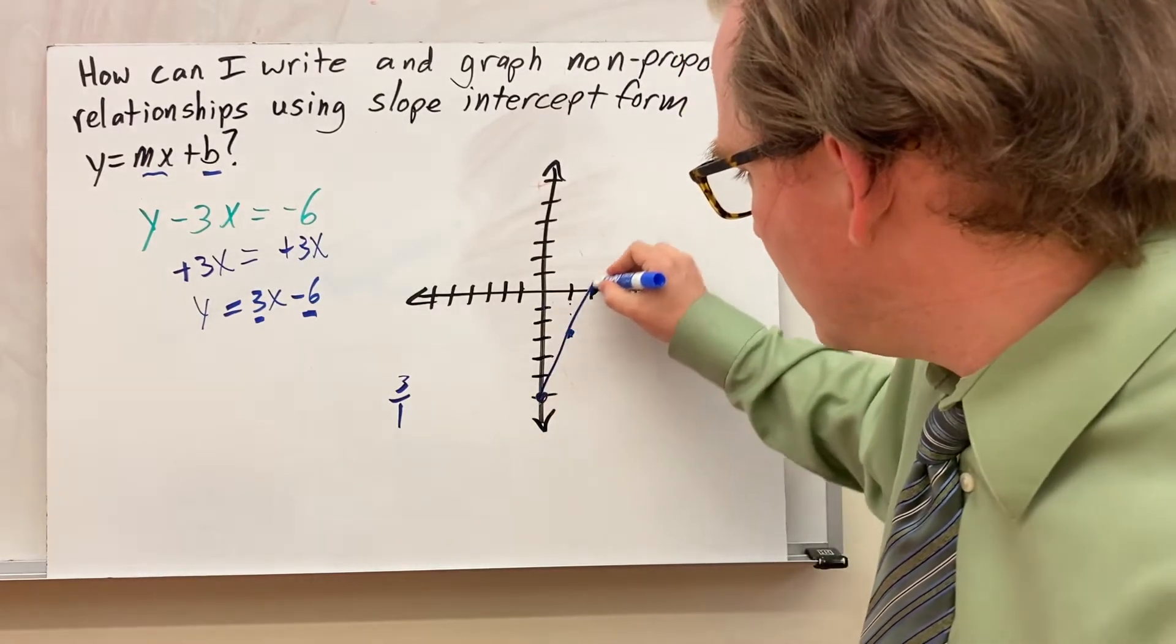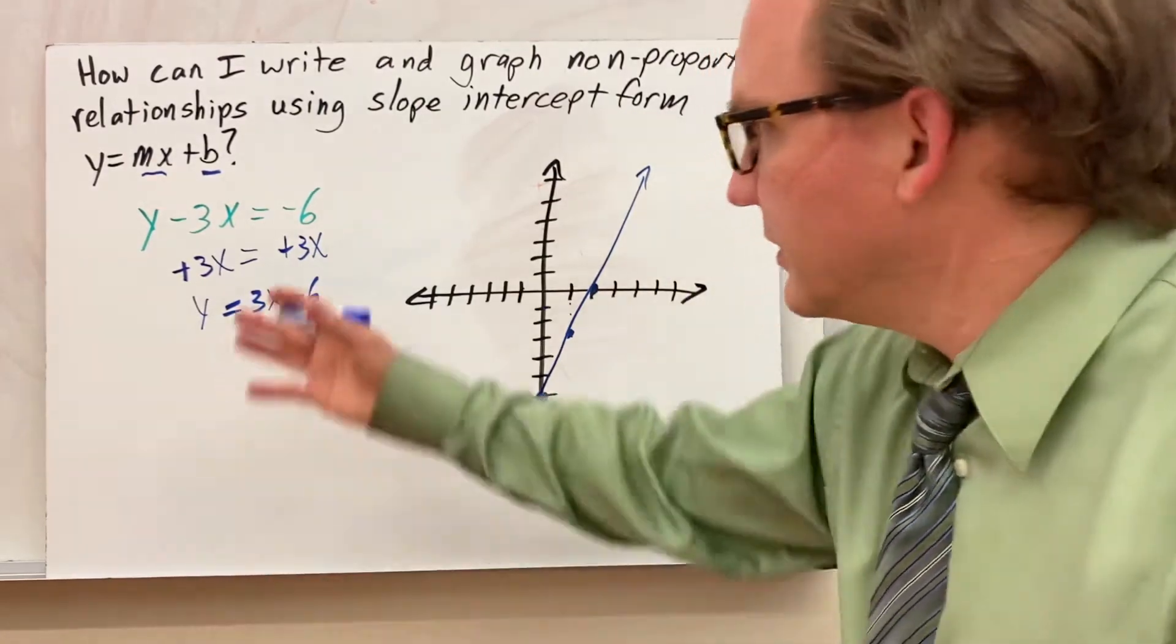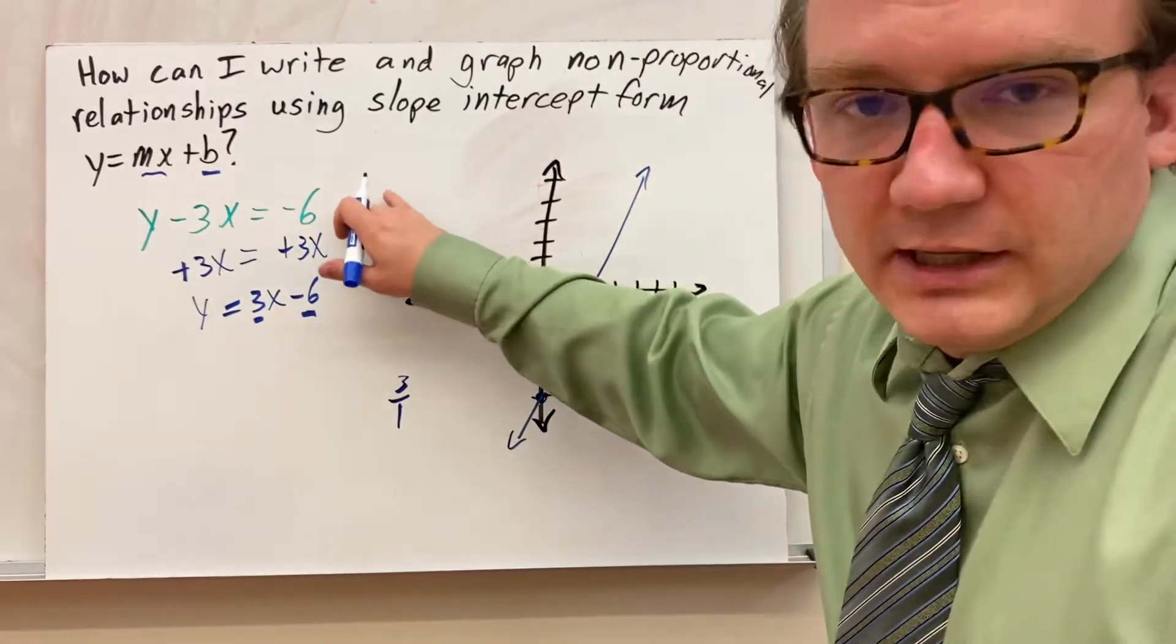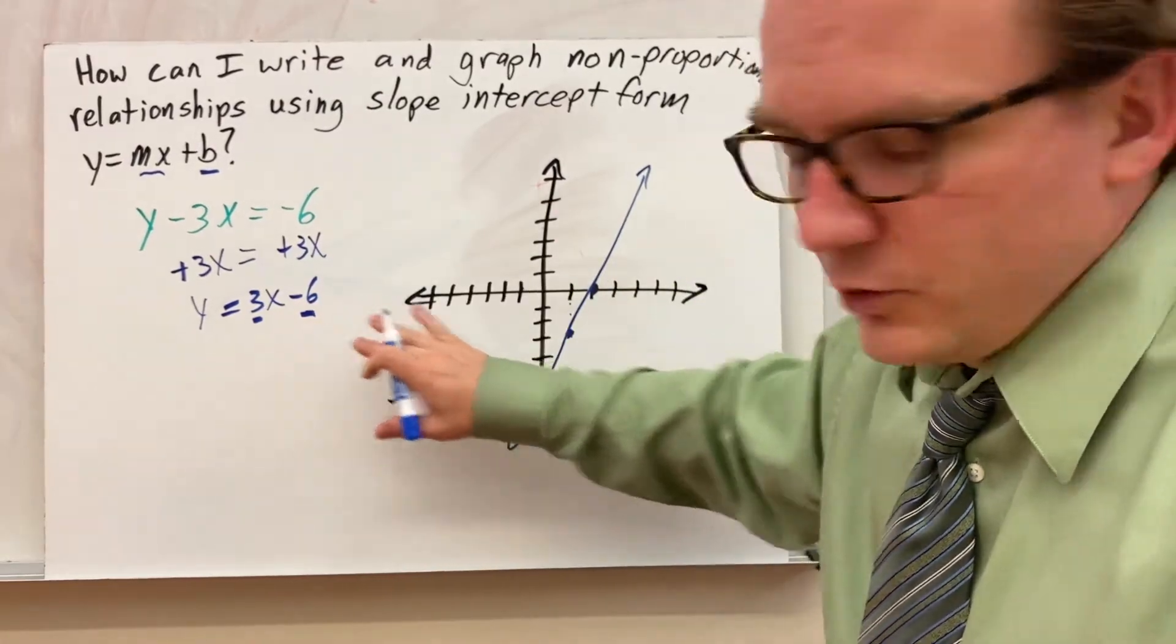And you can use a straight edge. Sketch your line there. Draw your arrows. And now I've graphed this line. Started out like this: y minus 3x equals negative 6. Converted to slope-intercept form. And I've now graphed it.